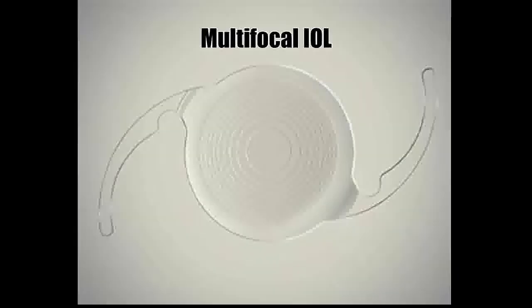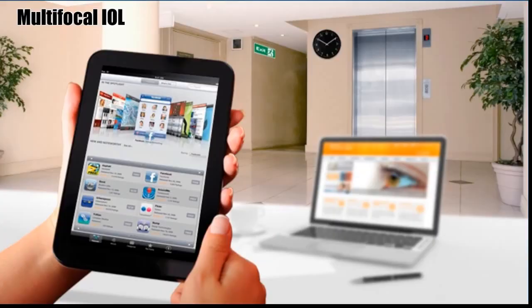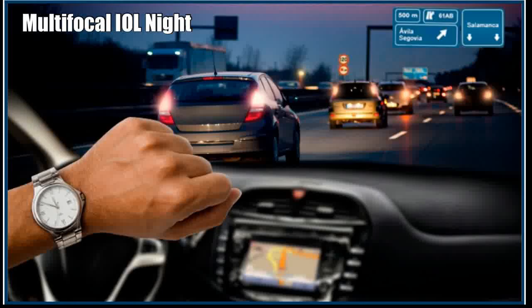Coming to the next group of IOLs, the multifocal IOLs. These lenses provide good distance vision and good near vision, but there is poor intermediate vision. In the night time, one will have clear distance and near vision, but few experience distant lights to appear more bright.